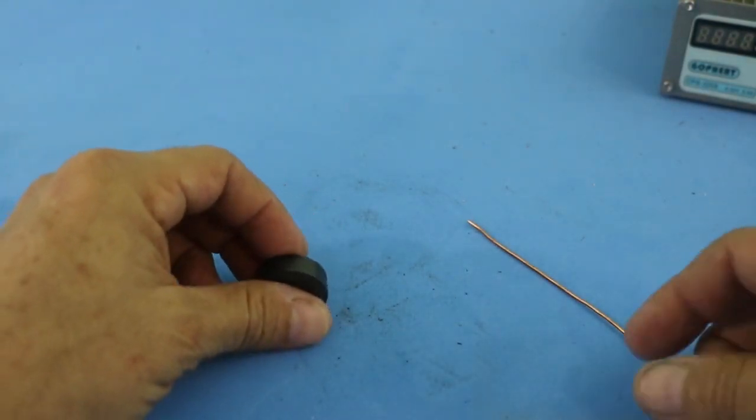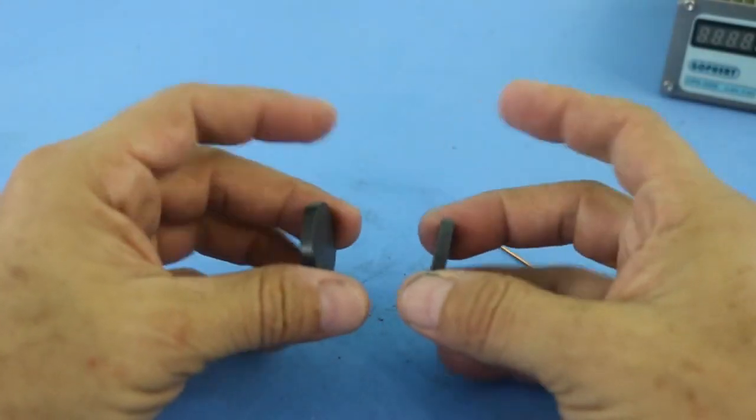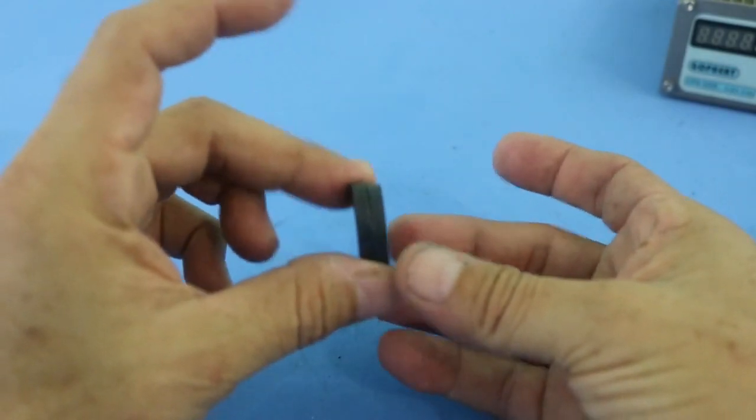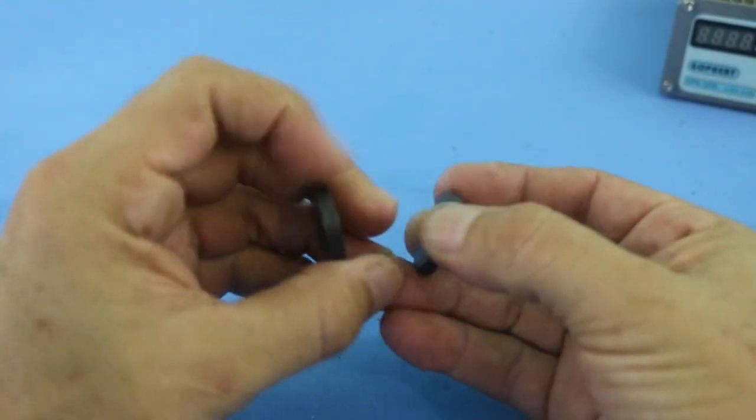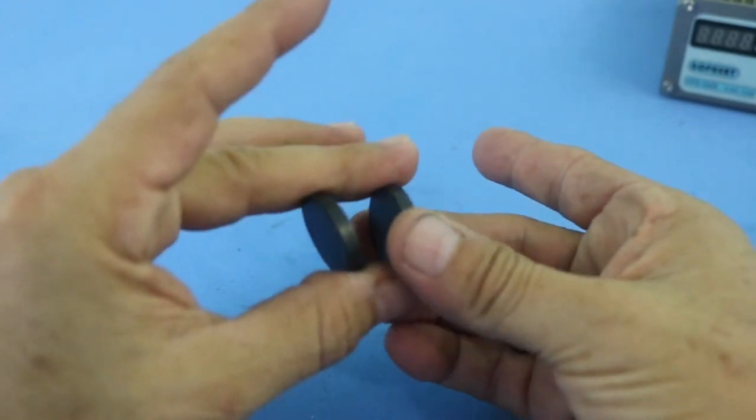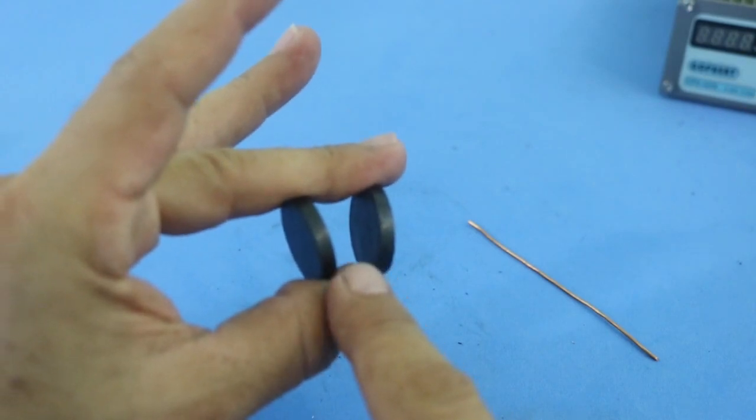The Lorentz force results from the interaction of magnetic fields and electric currents. Here I have a couple of magnets and if I put them in this way we will have a magnetic field in the region between the magnets.